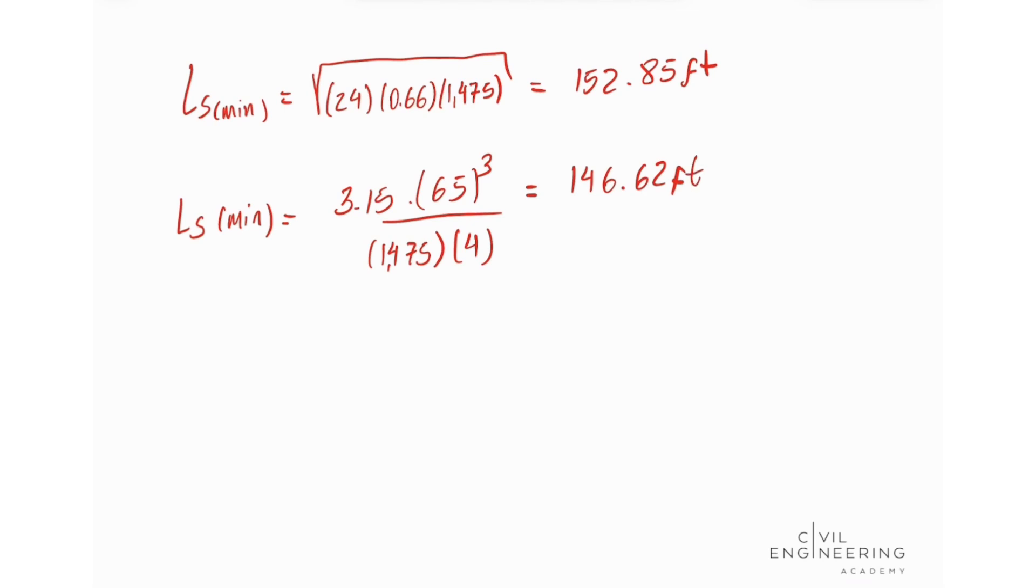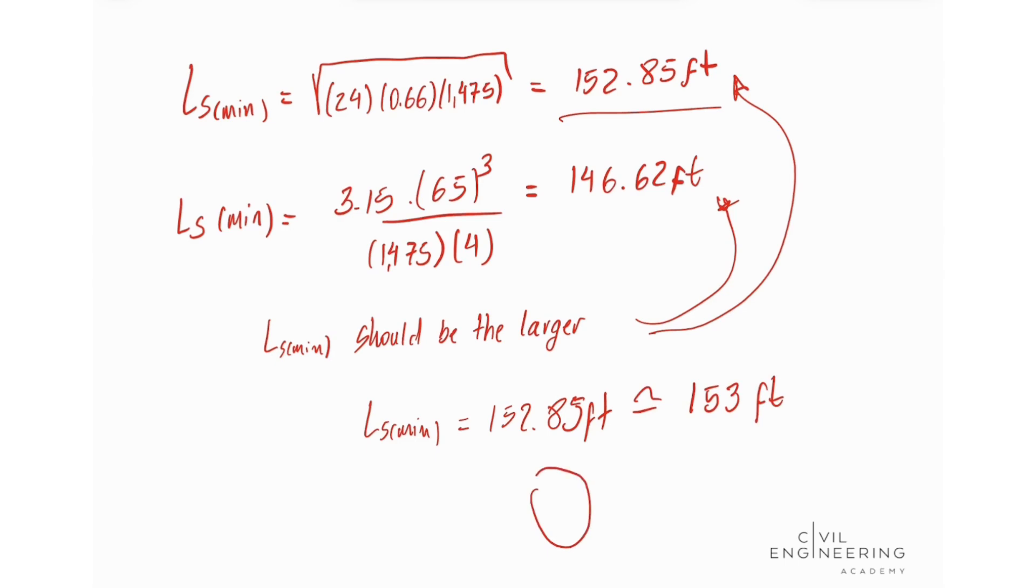And AASHTO green book says that the L_s minimum should be the larger of these two values. So in this case we got that our L_s minimum is equal to 152.85 feet, and this is approximately 153 feet. That gives us the correct answer, Alternative D. Thank you and I'll see you next time.